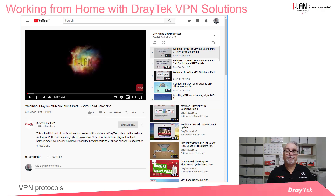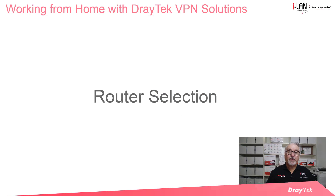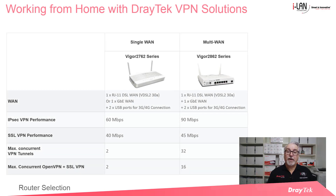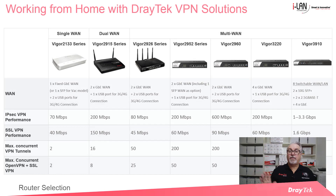We'll now look at how to choose the right router. Two main factors decide which router will best suit your needs: what type of internet connection you have, and how many simultaneous VPNs you require. One table shows supported VPN tunnel counts in models featuring an ADSL or VDSL2 modem, suitable for ADSL or NBN fibre-to-the-node or fibre-to-the-building connections. They also have Gigabit Ethernet WAN ports and can be connected to 3G or 4G internet using a compatible USB modem. The Vigor2762 series is great for a small branch or single remote user LAN-to-LAN VPN, while the Vigor2862 series is better for a larger office. A second table shows models with Ethernet WAN ports, suitable for cable internet, NBN fibre-to-the-premises, fibre-to-the-curb, hybrid fibre coaxial, fixed wireless and SkyMuster satellite connections.